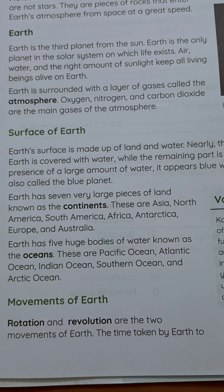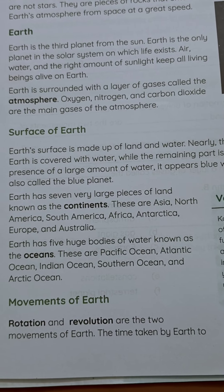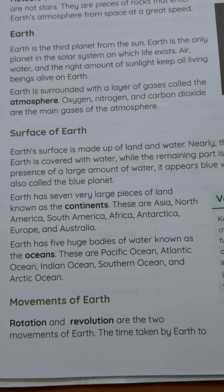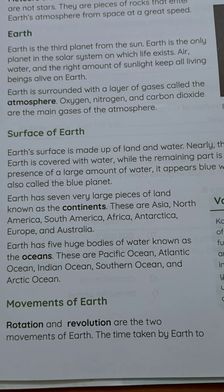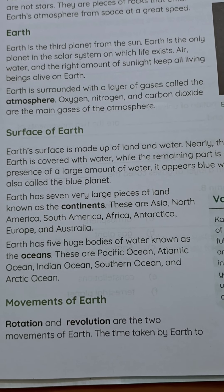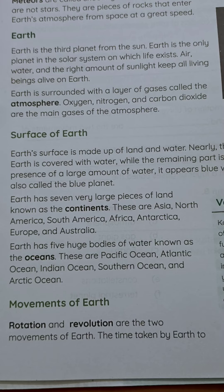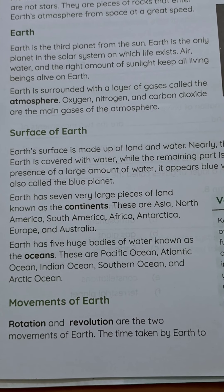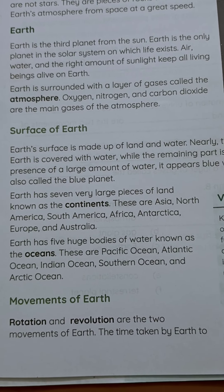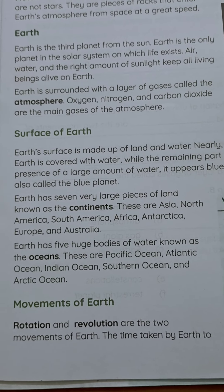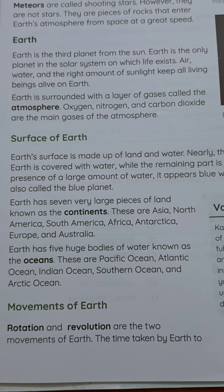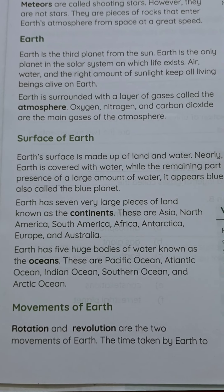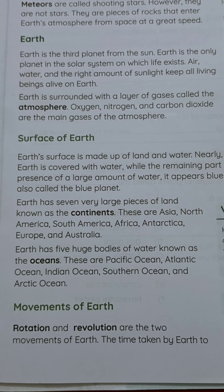Earth has 7 very large pieces of land, which we call continents. These are Asia, North America, South America, Africa, Antarctica, Europe, and Australia. Earth has 5 huge bodies of water, which are the big water bodies called oceans: Pacific Ocean, Atlantic Ocean, Indian Ocean, Southern Ocean, and Arctic Ocean.